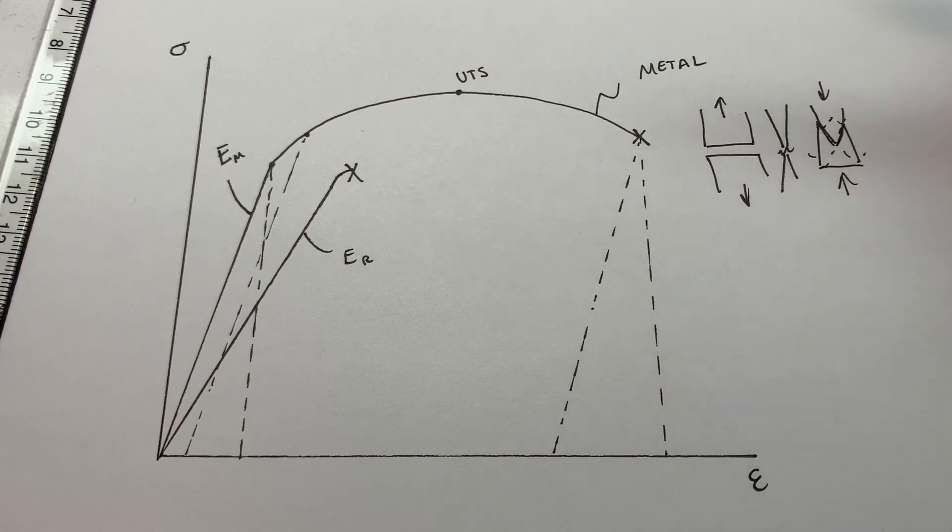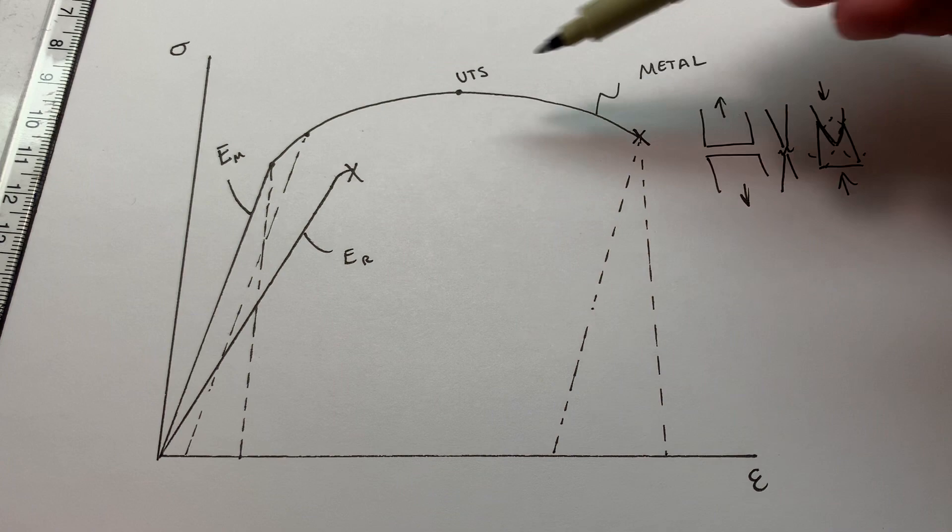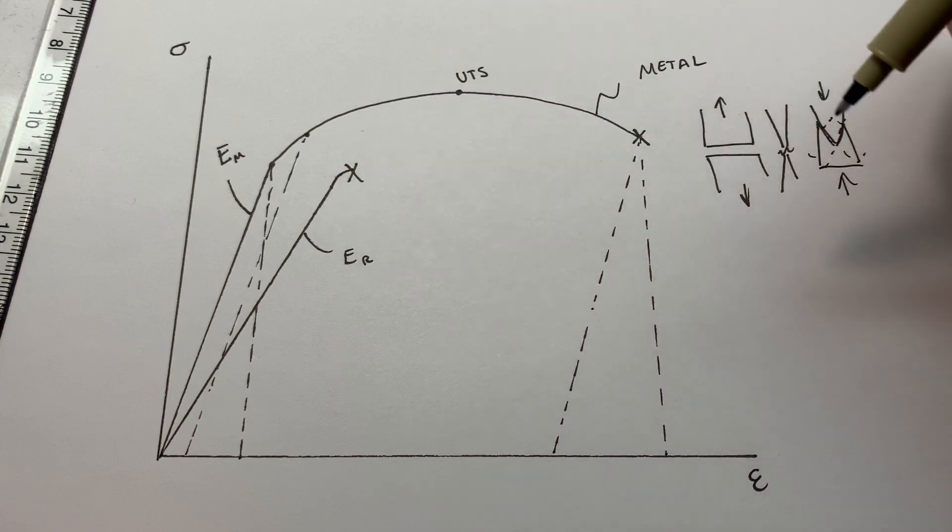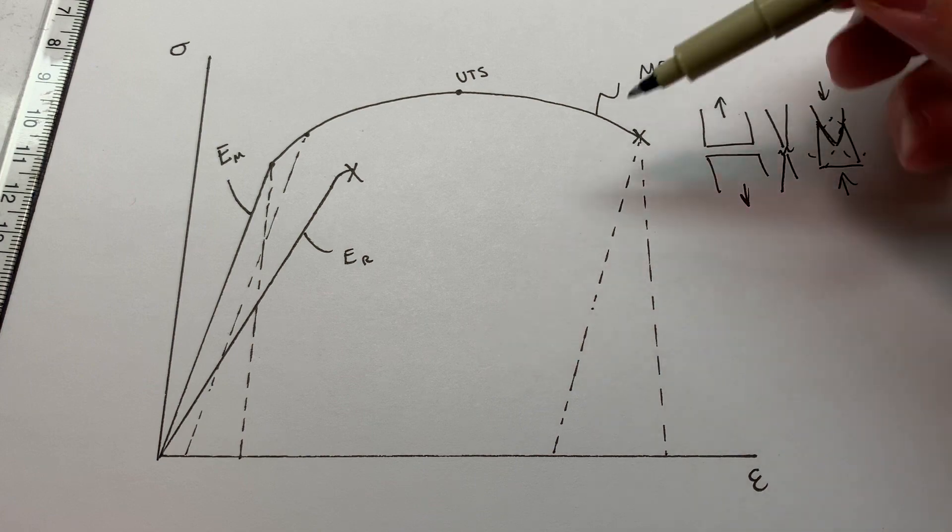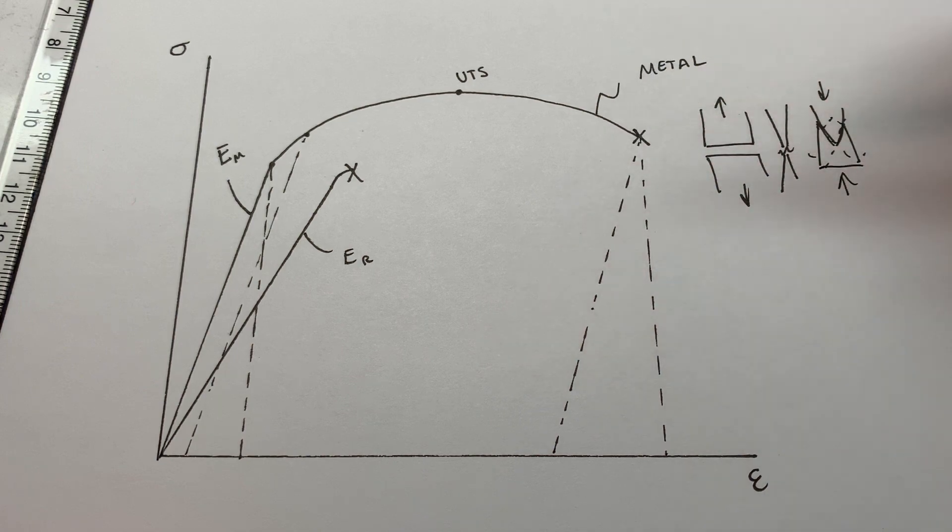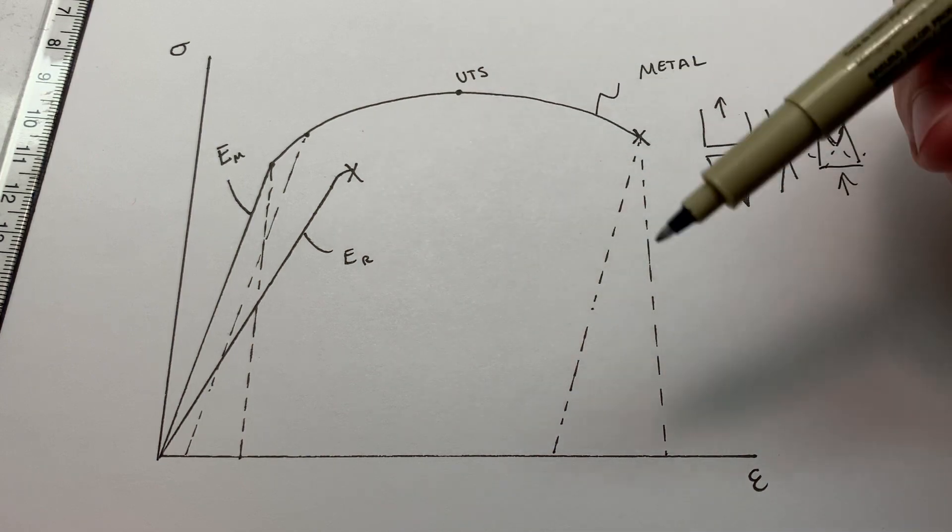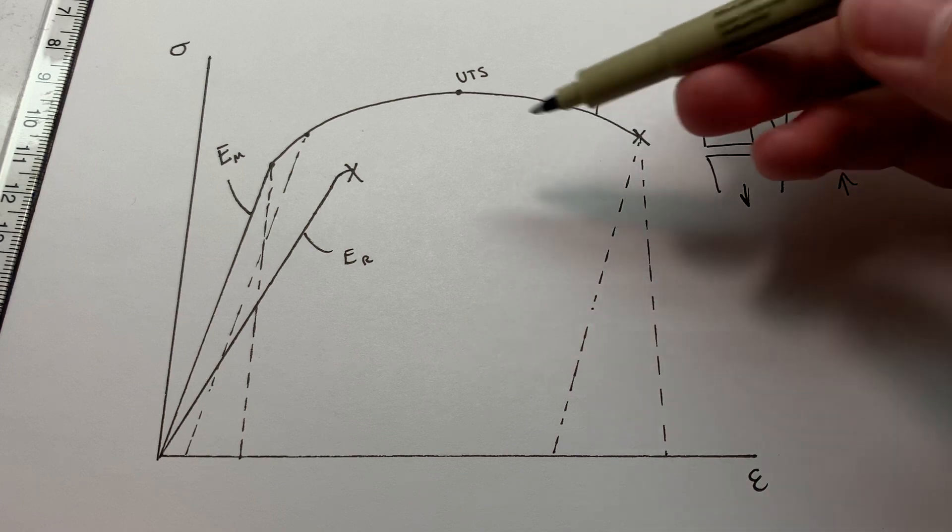So that's the first note. Catastrophic failure versus gradual. Of course, with metals, you're generally going to want to avoid yielding also. But where the failure actually occurs, the fracture, you have to go through this entire region. And then the other consideration here is energy. In rock mechanics, we call the area under this curve the strain energy density.